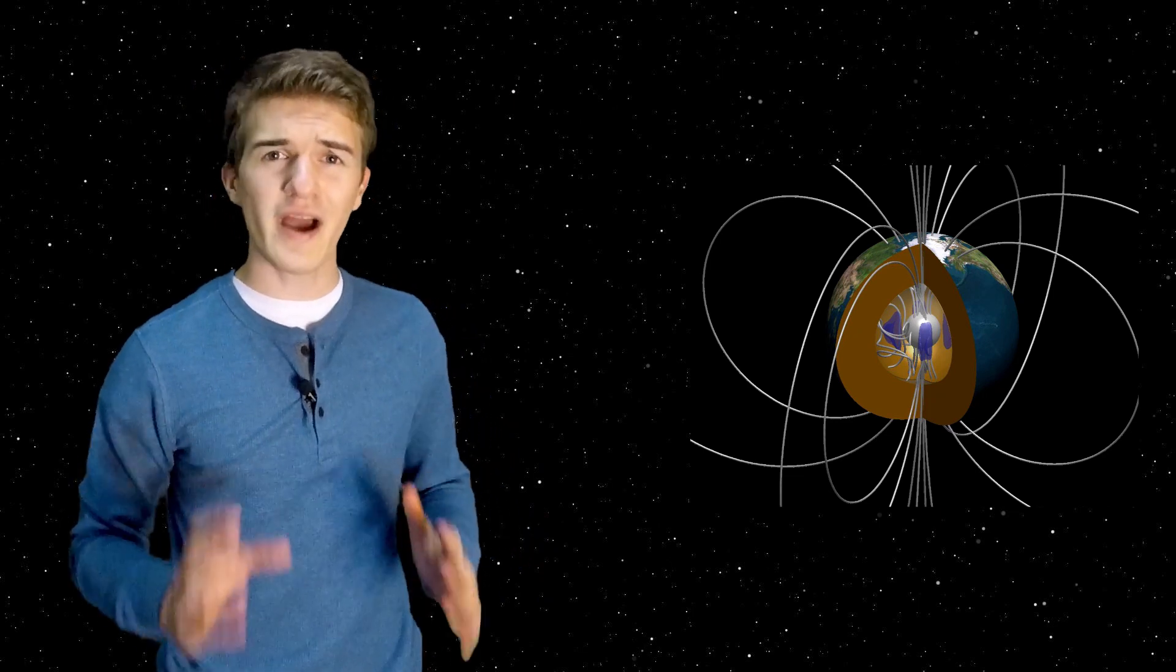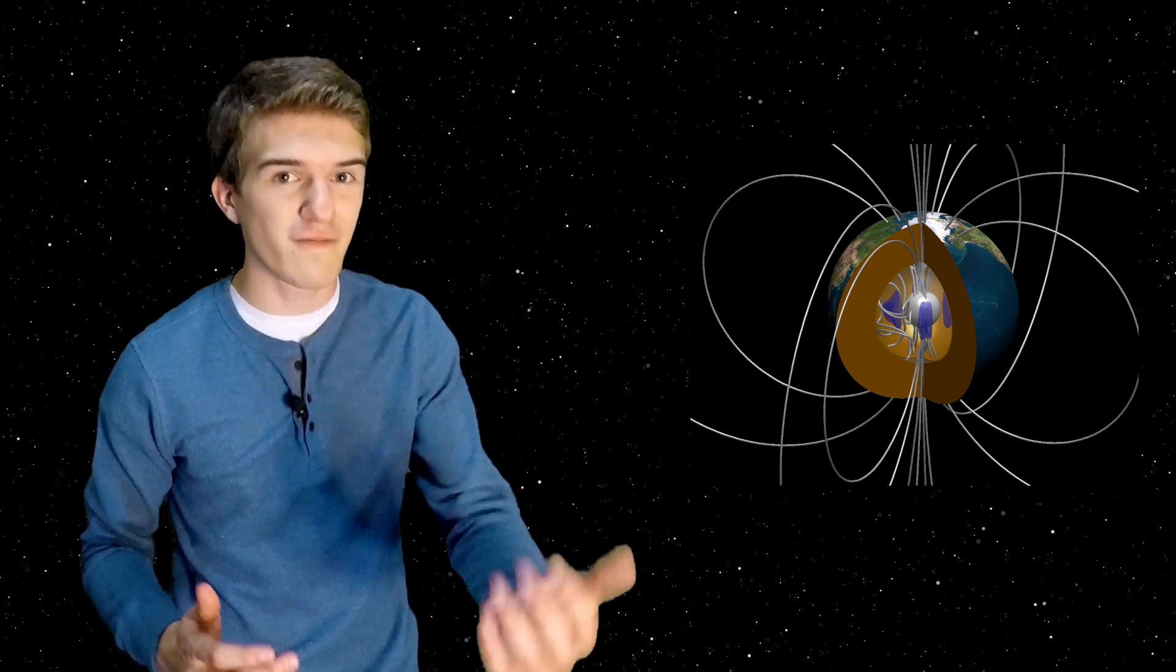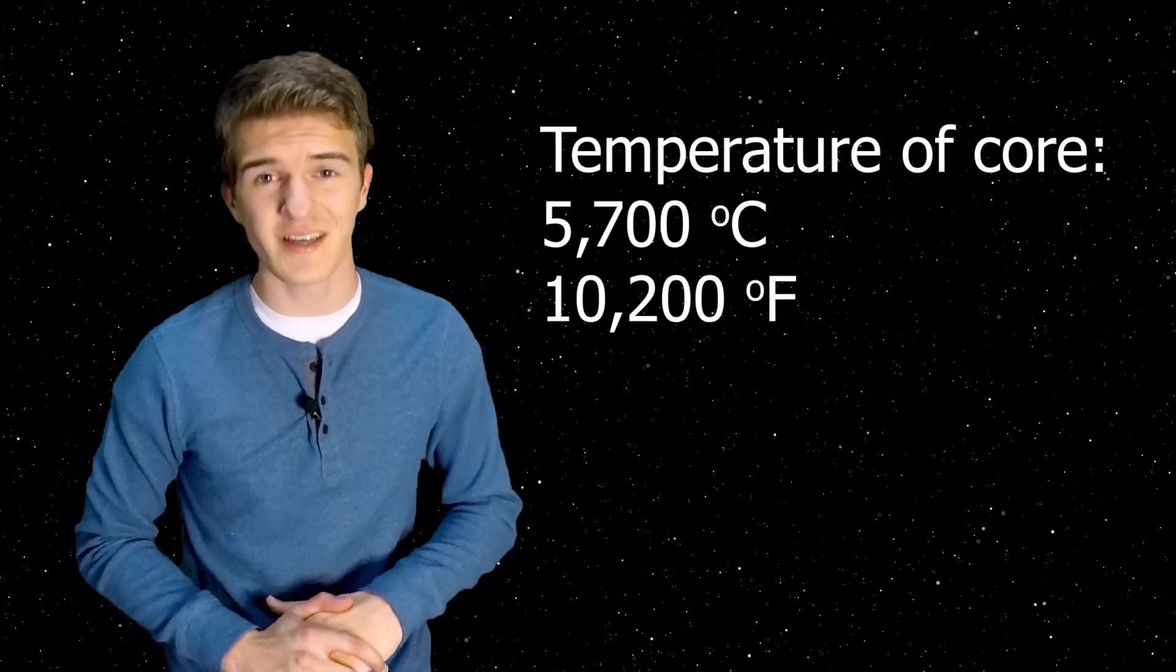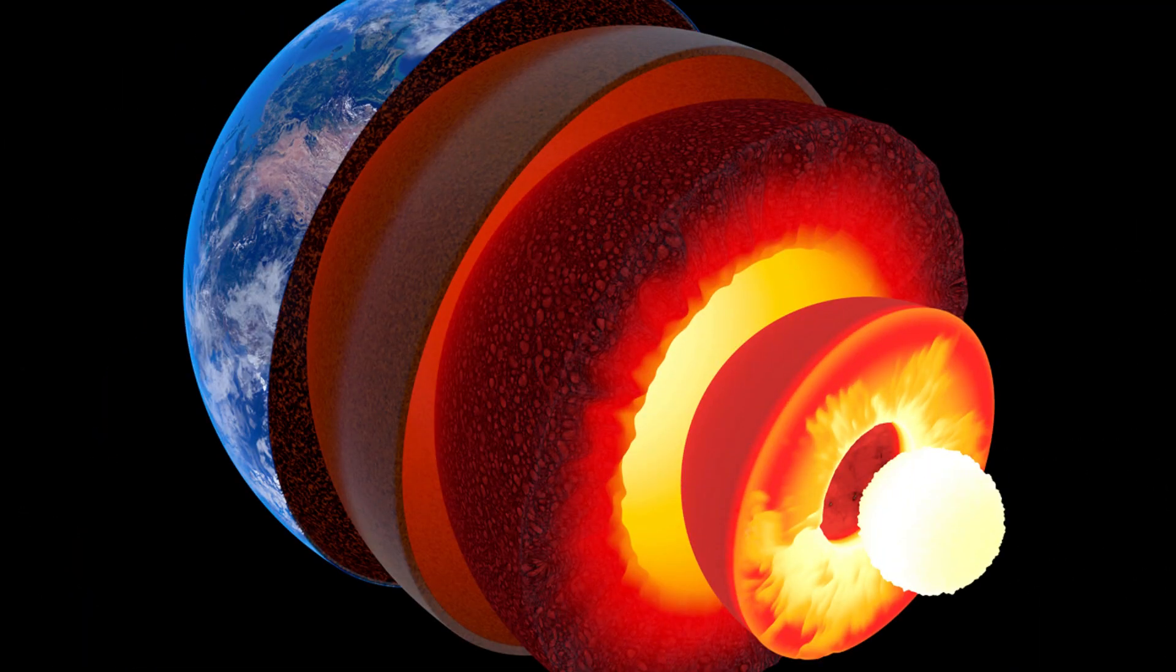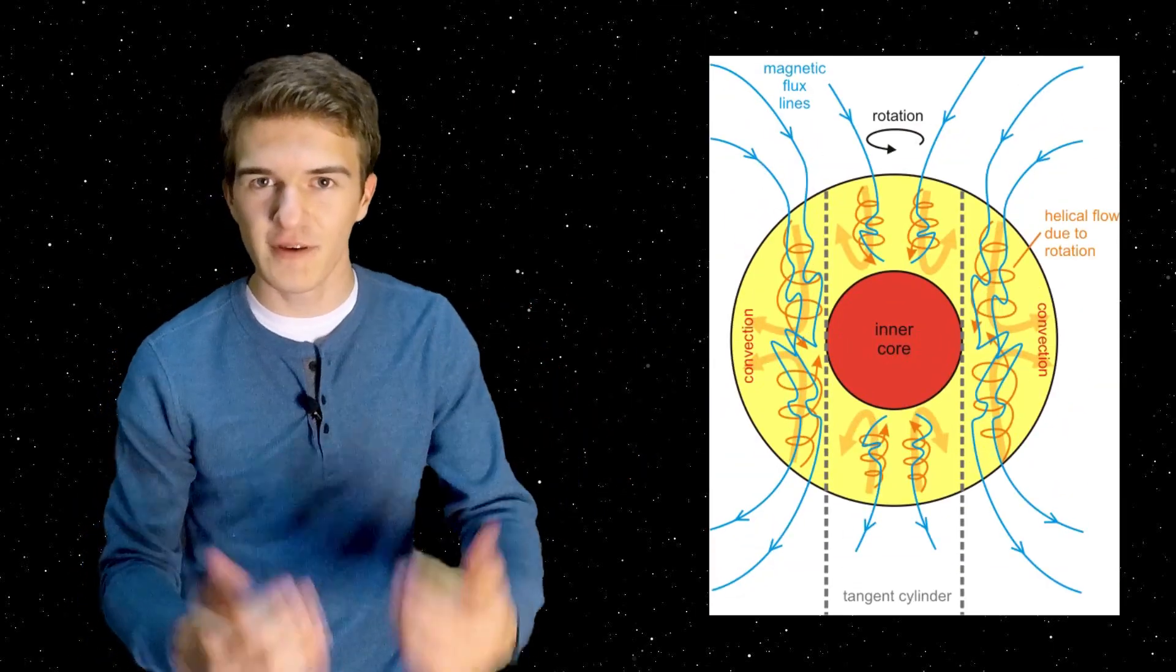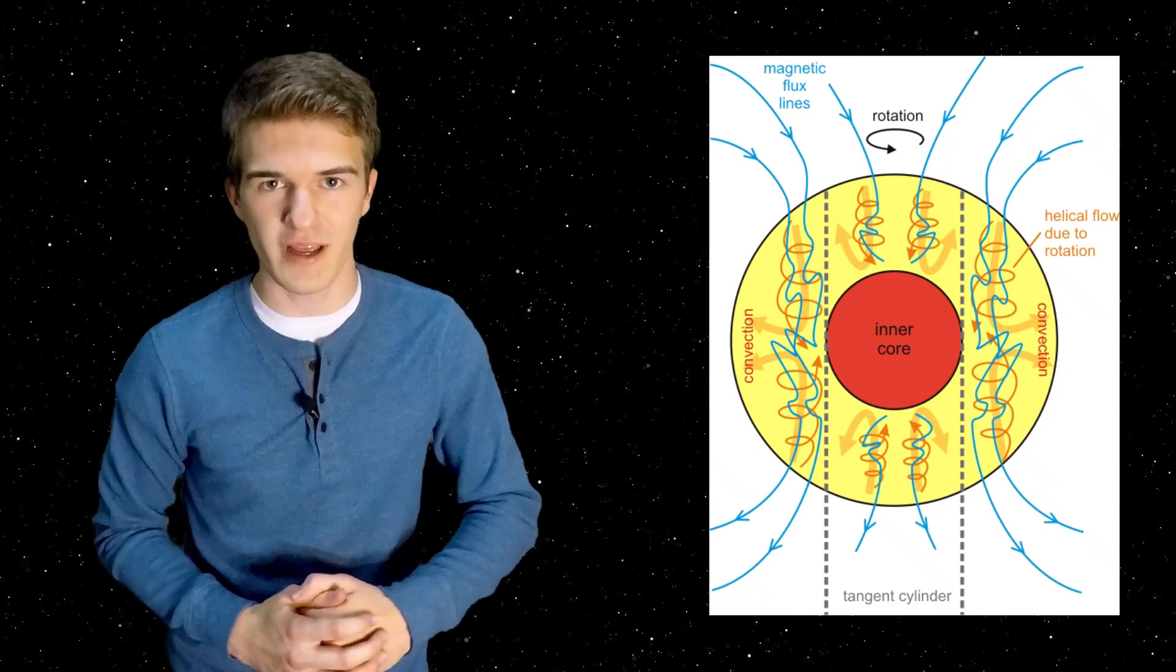The outer core is estimated to be mostly made out of nickel and iron. And because of this, since they're liquid, they're probably really hot. In fact, they think that it's about 5,700 degrees Celsius, which is really warm. But if you take planet Earth, which is very hot on the inside, and outer space, which is very cold, this means that heat is slowly going to radiate out from the inside. And as the heat comes outwards, it actually causes the outer core to churn, which creates this magnetic field, which protects us from the sun's radiation.